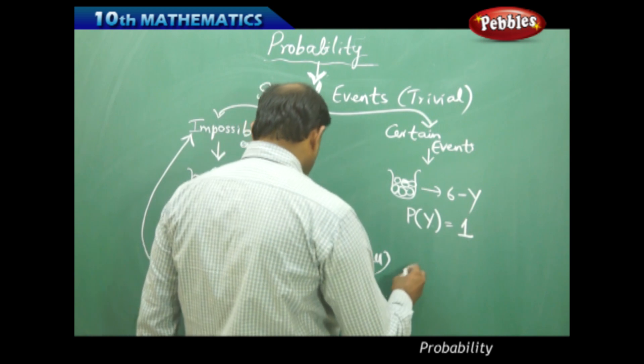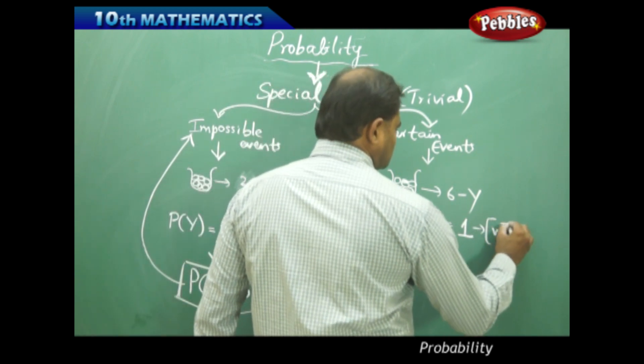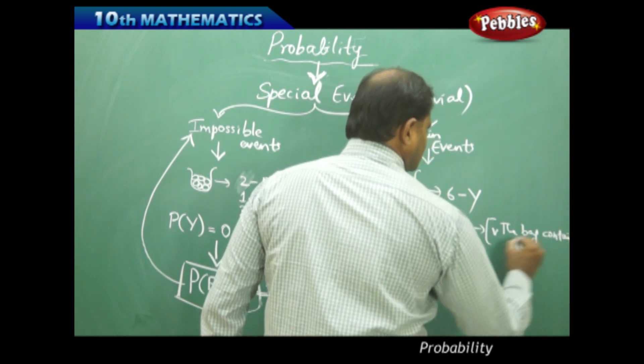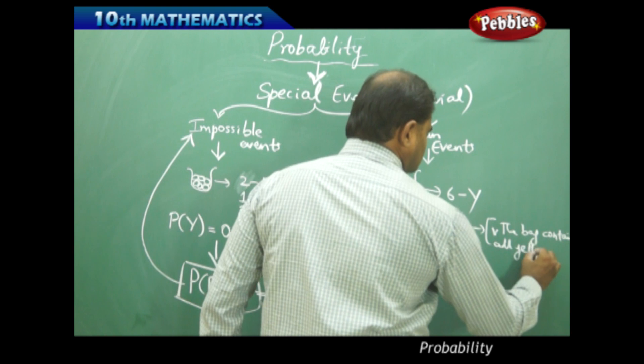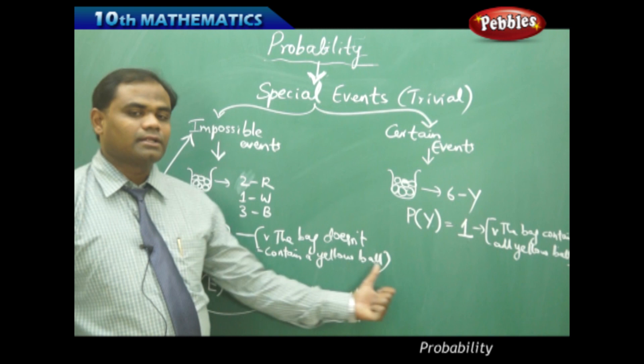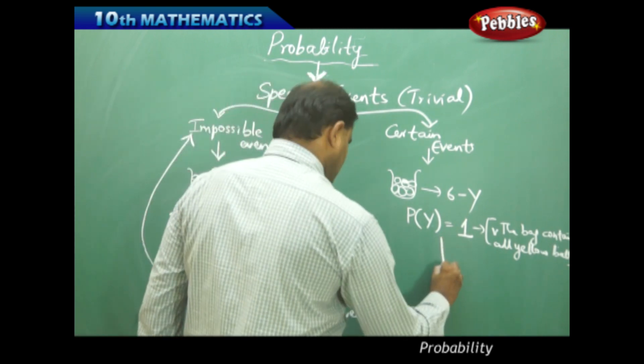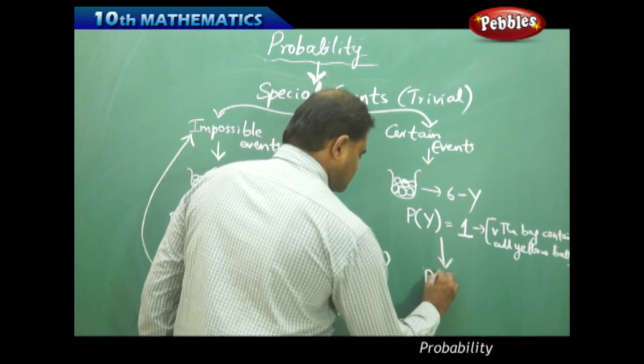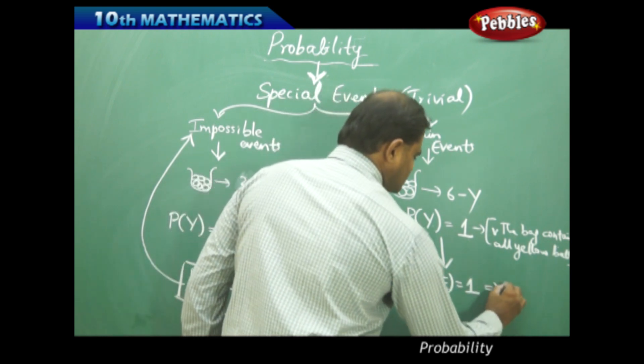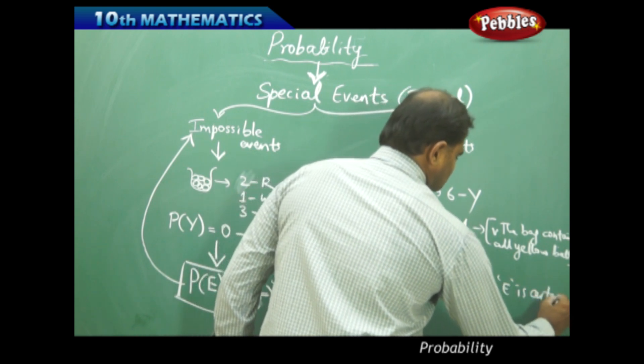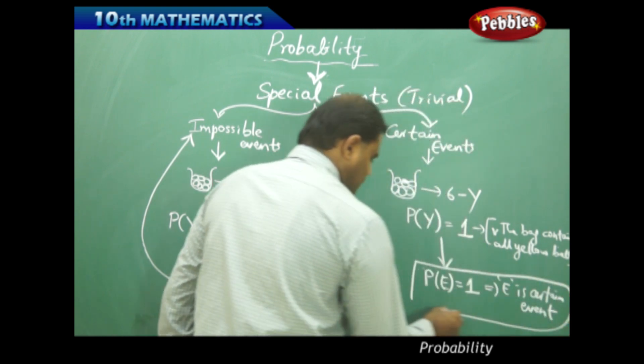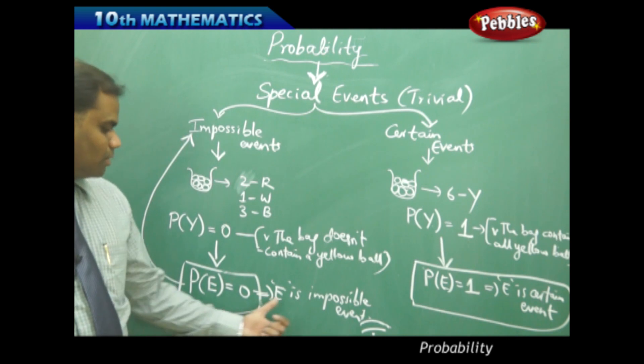In such cases we have, since the bag contains all yellow balls, unlike the previous case where the bag doesn't contain a yellow ball at all, in this case I have P(E) equal to one implies E is a certain event.